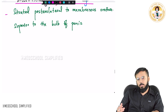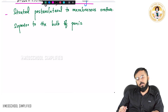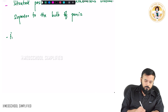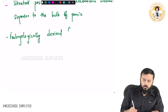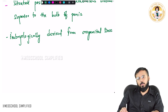Embryologically, how are they derived? In the embryological chapters, there is something called the urogenital sinus. So embryologically, these glands are derived from the urogenital sinus.